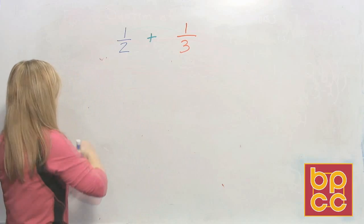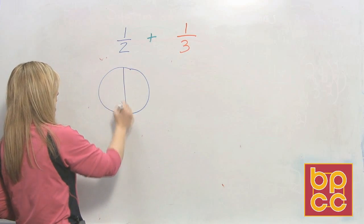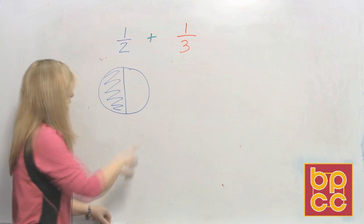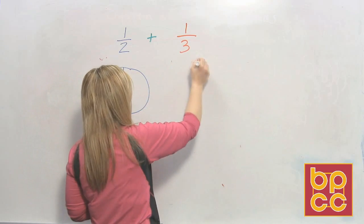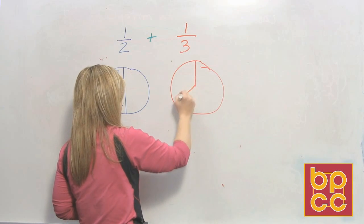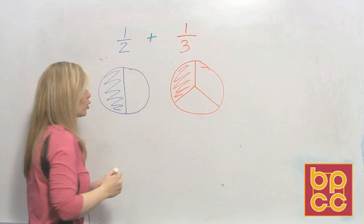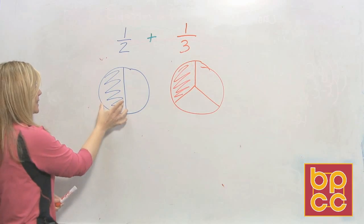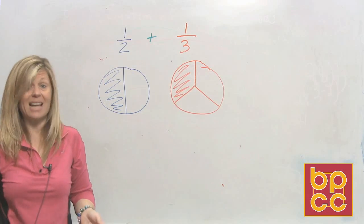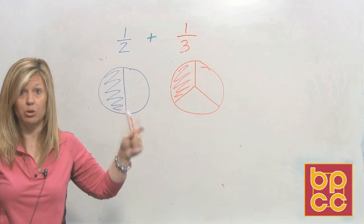Visually speaking, if we drew a picture — if I start with a whole circle and I only want half a circle, that's what I'm looking at. And if I have a third, I'm starting with a whole circle, cutting it into three equal pieces, and I only have one. The question is, can I take this half a circle and add it to this third of a circle? And it's obvious I cannot. They're not the same size. They are not alike. They physically do not look the same.